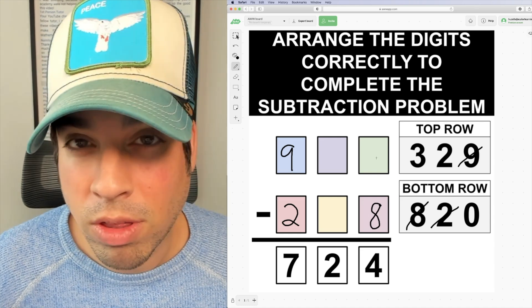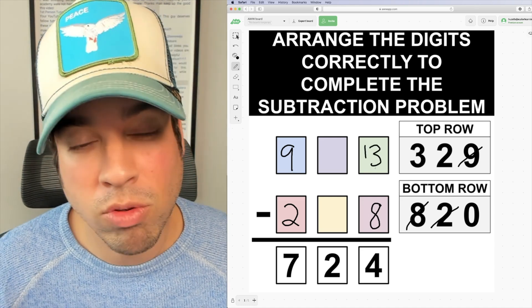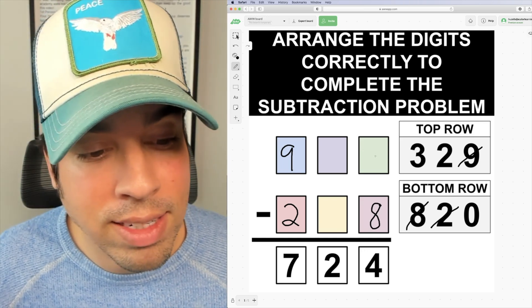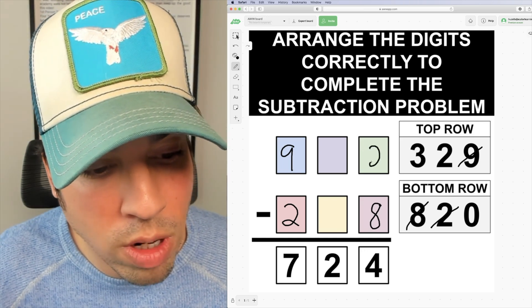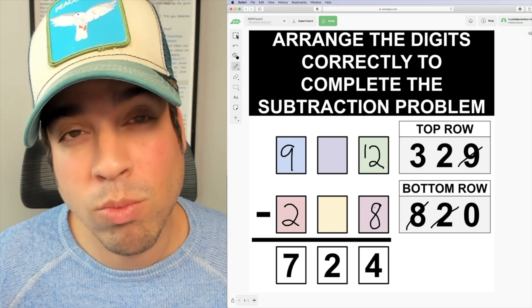But what now has to go up here, a three or a two? Well, if I put a three up here and I borrowed a one, it would be 13 minus eight, which is a five. Instead, it's got to be the two up top because if I borrowed a one, I'd have 12 minus eight, which is four.